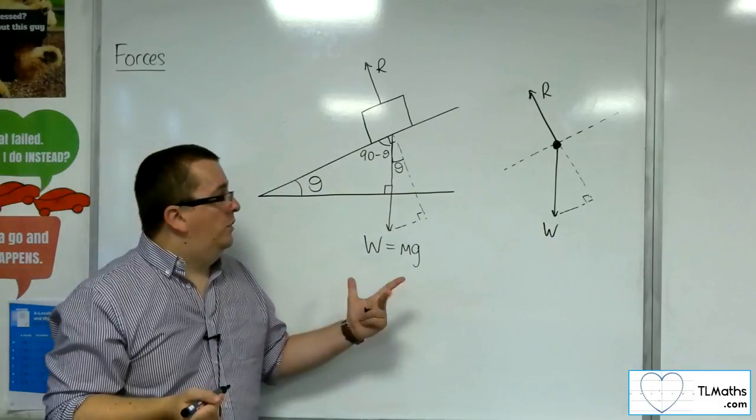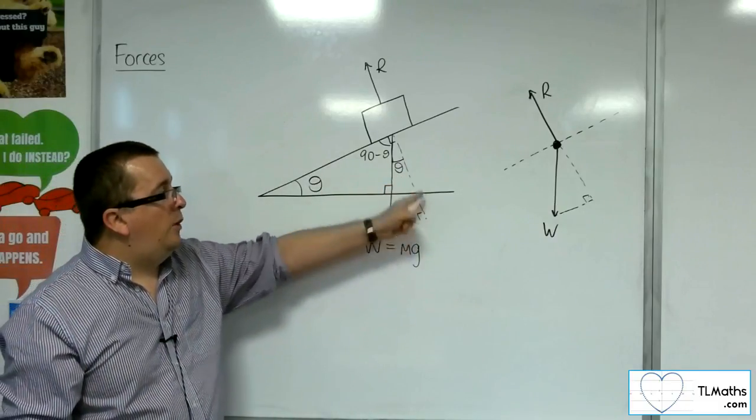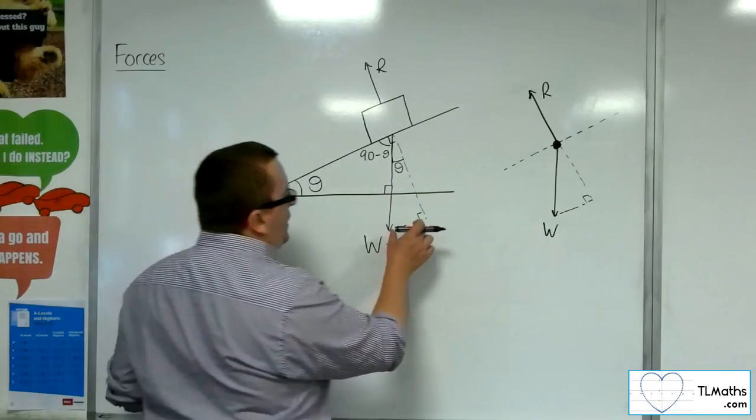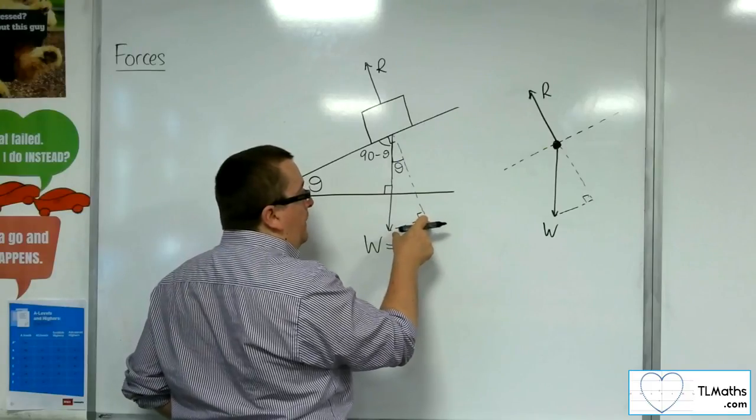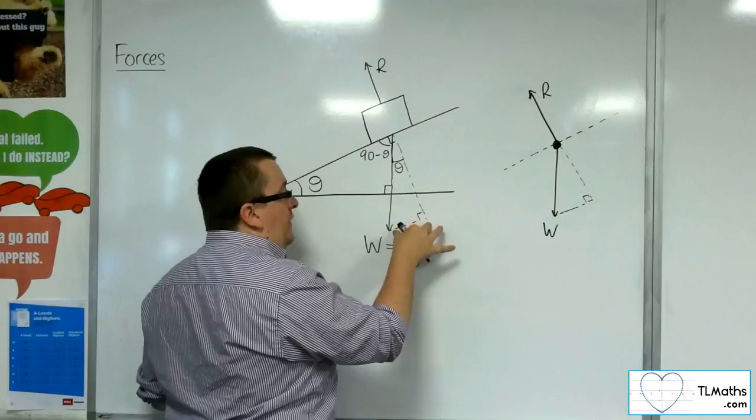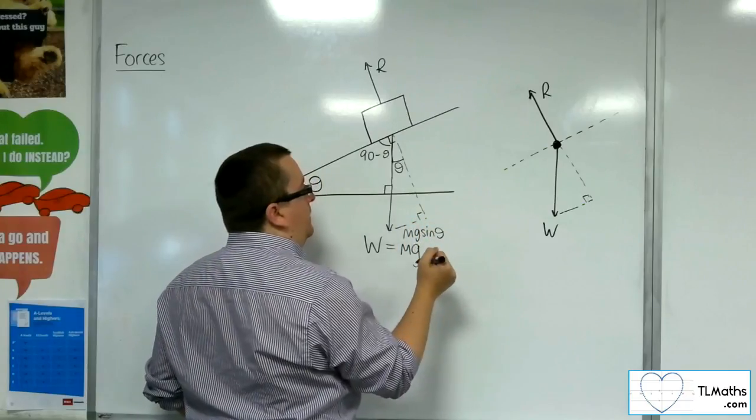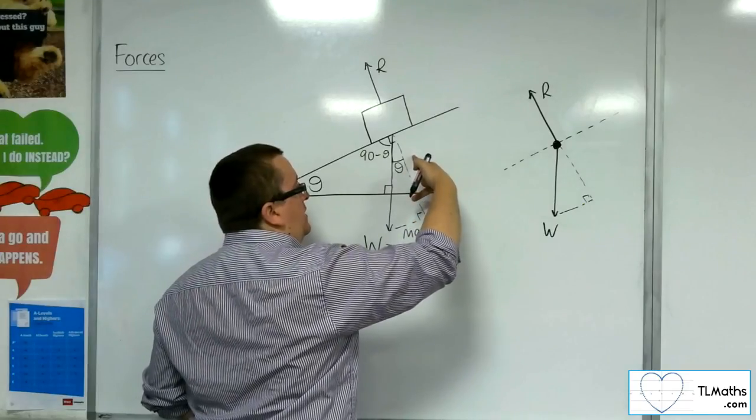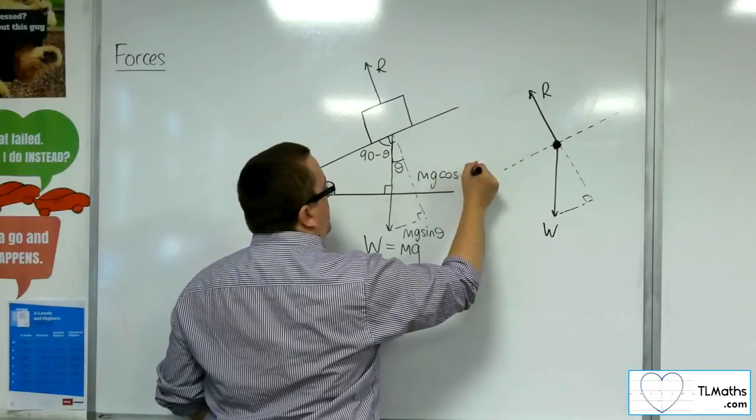So therefore, I can then think about this triangle using its opposite and adjacent sides. So this side, the opposite side, using trigonometry, SOHCAHTOA, will be W sine theta, or Mg sine theta. And this side will be W cosine theta for the adjacent, or Mg cosine theta.